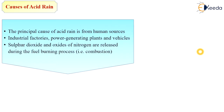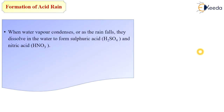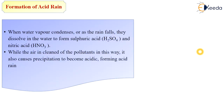The first important man-made cause of acid rain is industrialization. Different types of industries like power generation plants and oil-burning industries emit large quantities of sulfur and nitrogen oxides. The second cause is sulfur dioxide and oxides of nitrogen released during the fuel burning process. When water vapor condenses or as rain falls, these gases dissolve in water to form sulfuric acid and nitric acid, making precipitation acidic and forming acid rain.